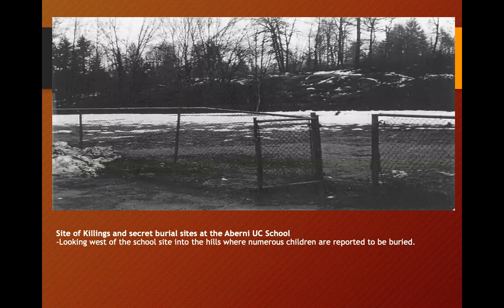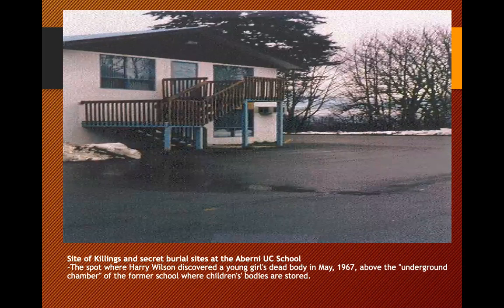Sites of killings and secret burials. There are stories about looking west at school sites in the hills where children were reported to be buried — a lot of them out west and further north of James Bay. The spot where a young girl's body was discovered in May 1967, above the underground chamber of a former school where children's bodies were stored. There's also evidence of bodies buried under apple trees — born to girls who had been sexually abused by priests.